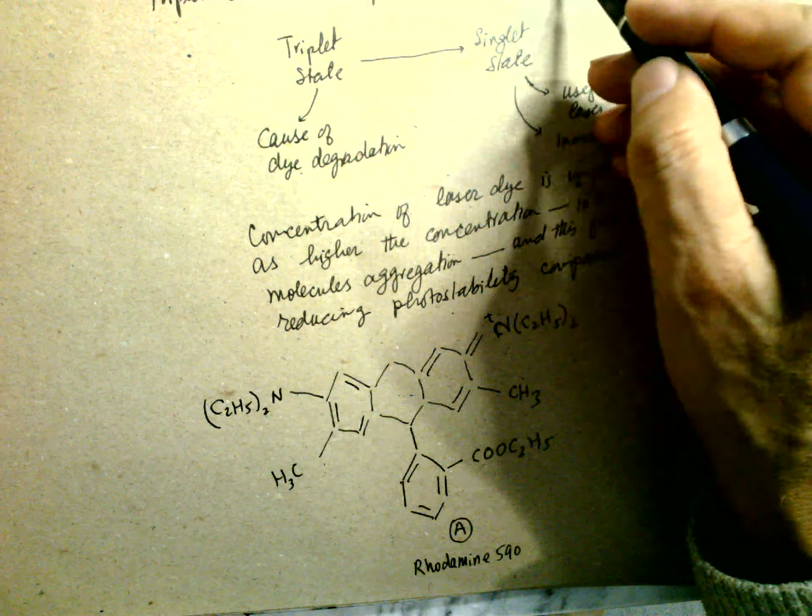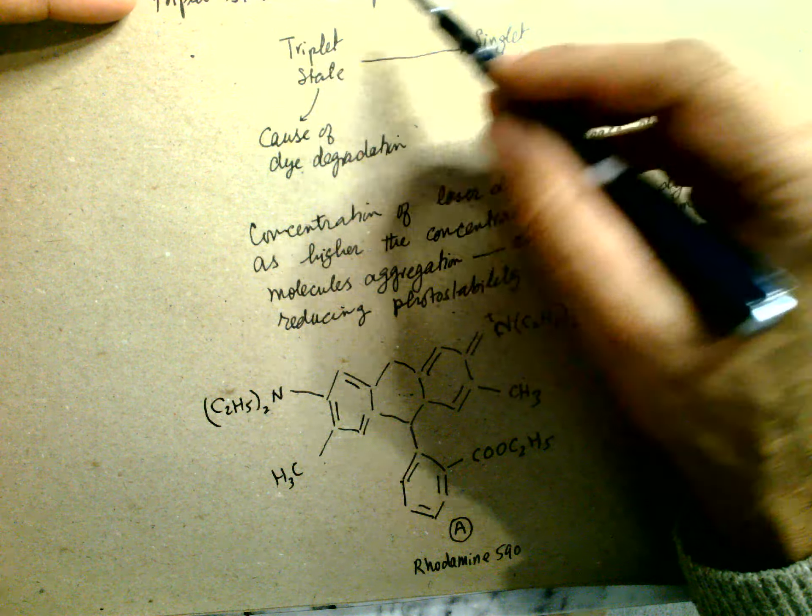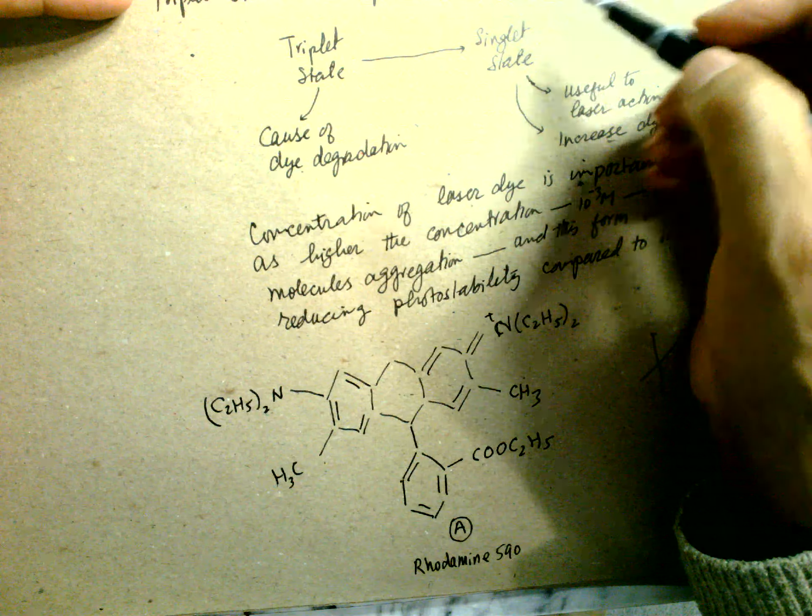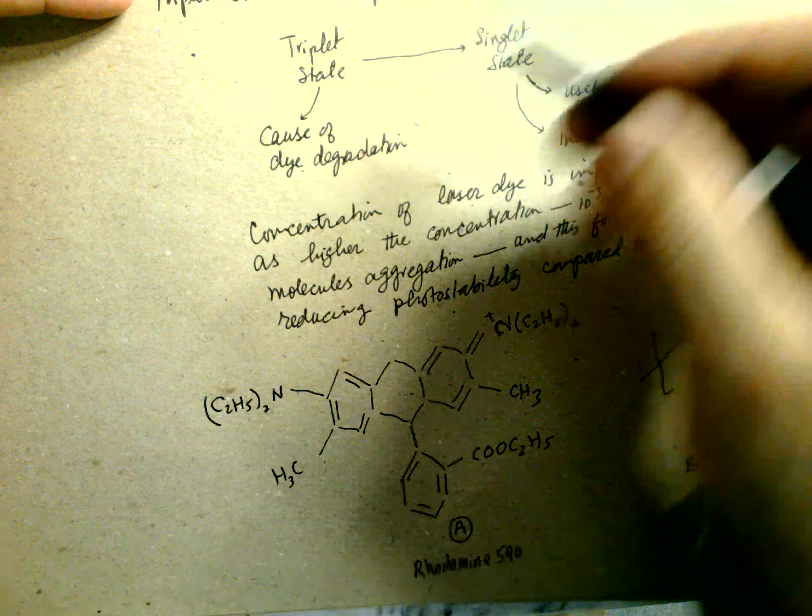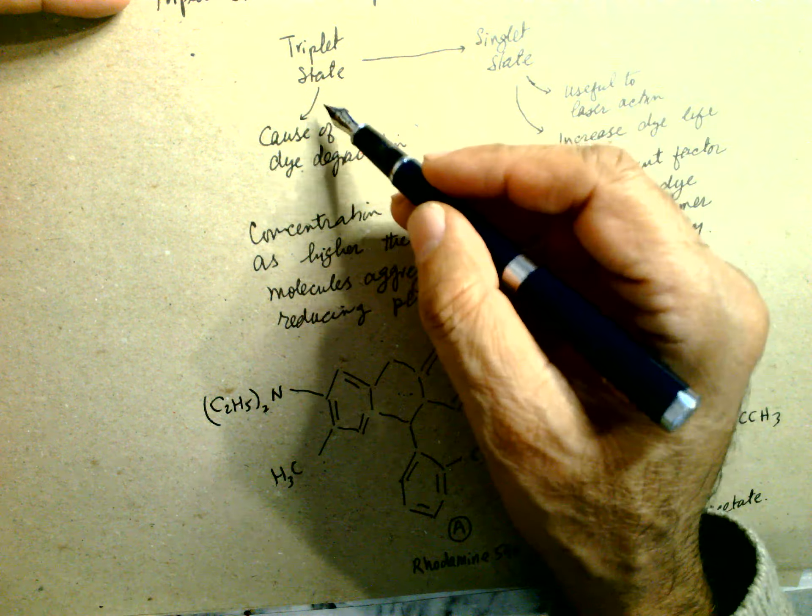The ability of vinyl acetate to reduce the population of triplet states in comparison to the singlet states. Triplet states are the cause of laser dye degradation and singlet states are useful for laser action. They increase the laser dye lifetime, so more singlets are available. Singlets are corrupted by triplet states, so concentration of laser dye is an important factor. At higher concentration, dimers form.